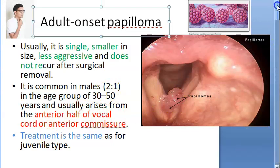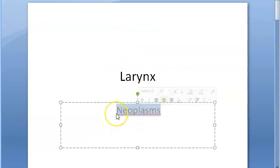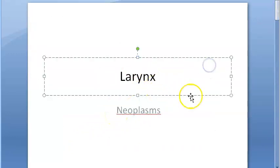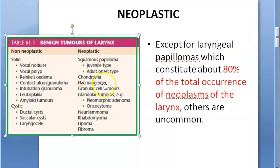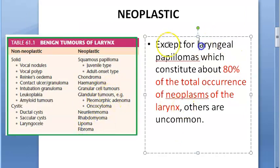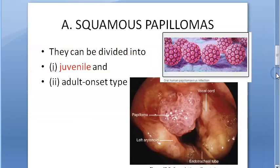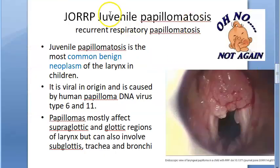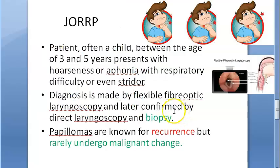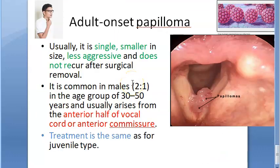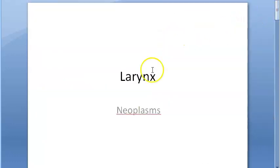To recap: we covered benign neoplastic tumors of the larynx — specifically squamous papilloma in juvenile and adult onset types. Other benign tumors include chondroma, hemangioma, neurilemoma, rhabdomyoma, lipoma, and fibroma. The most important is squamous papilloma — juvenile type also known as recurrent respiratory papillomatosis in children due to HPV, and adult onset type in males aged 30 to 50.